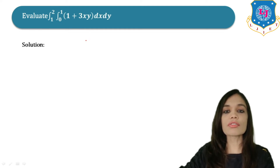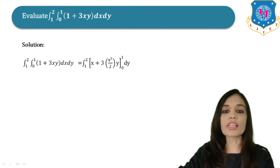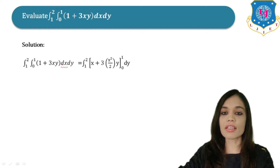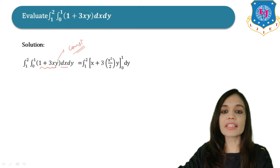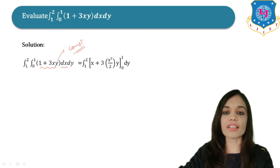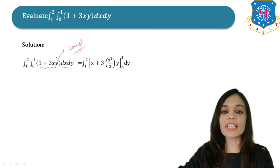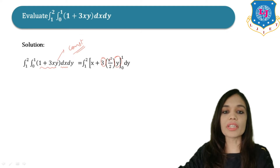Let us start with the solution. Firstly, we will evaluate the integral with respect to x, keeping y as constant. On evaluating, we keep the integration from 1 to 2 dy as it is. Integrating with respect to x: the integration of 1 is x, 3y remains as it is, and the integration of x is x²/2.